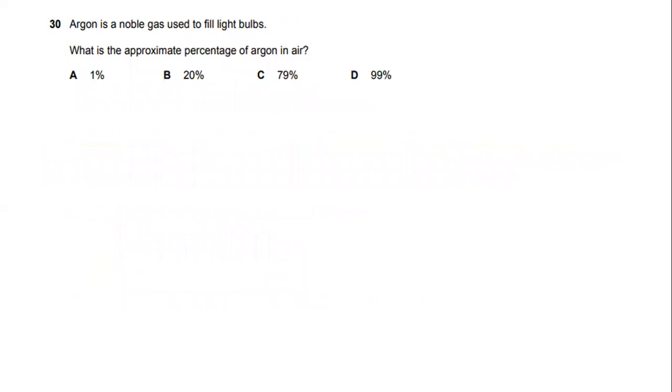Argon is a noble gas used to fill light bulbs. What is the approximate percentage of argon in air? We know that argon exists in air but in a low quantity. Argon makes up 0.94% of the Earth's atmosphere and is the most abundant atmospheric noble gas. The answer will be A.